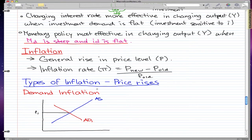We'll focus on inflation and types of inflation. The general definition for inflation is that it's the general rise in price level P, and the inflation rate, which we symbolize as pi, is equal to the new price minus the old price over the old price.